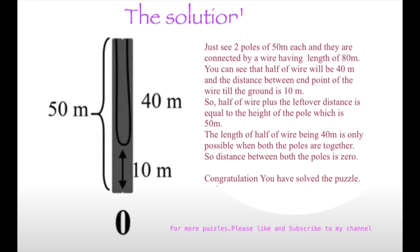The length of half of the wire being 40 meters is only possible when you have folded it in half, which is only possible when both the poles are together. So actually the distance between the poles is zero. Now you see how the image tricks the brain.